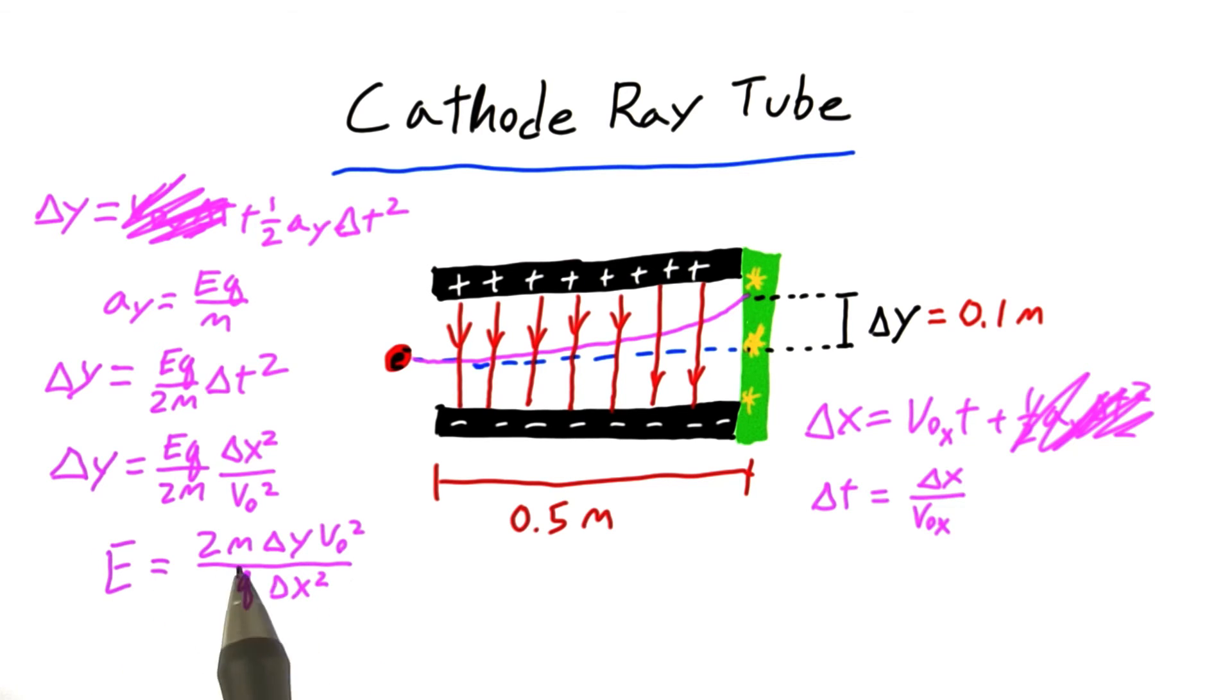Now this looks quite messy, but I actually know all these values. I know the mass of the electron. I know its charge. And I know the x and y distances and our initial speed. And plugging in all those values,